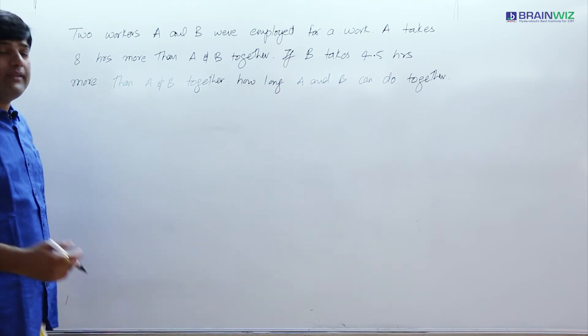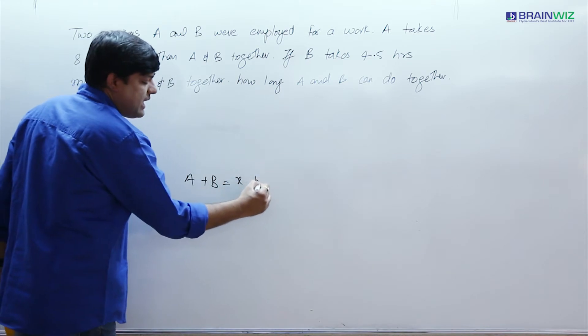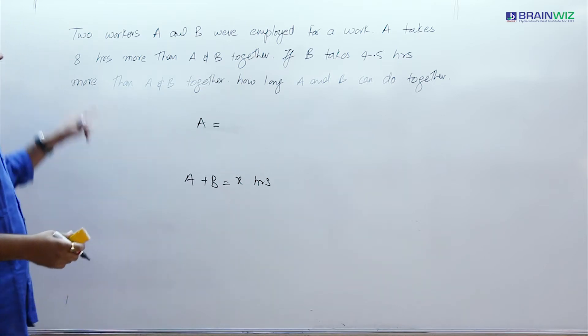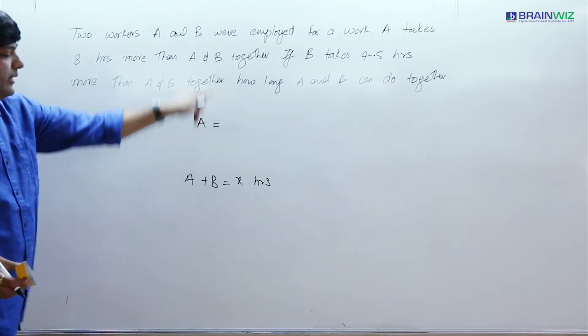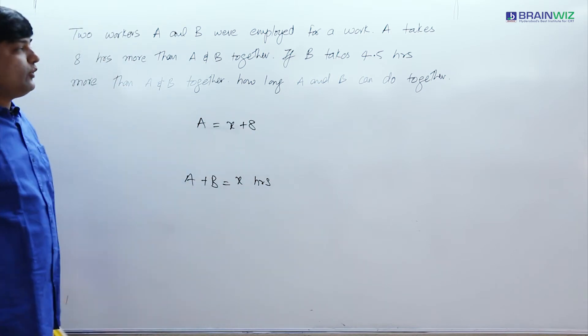Now let's try to assume that A and B together do the job in X hours. Now see here, A takes 8 hours more than A and B together, so it is X plus 8.